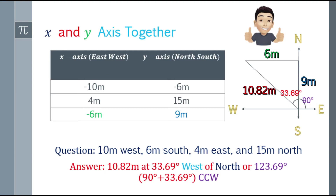Or we can express it as 123.69 degrees CCW. Where does 123.69 come from? Starting from east all the way to our angle: 90 plus 33.69. Both answers are correct — you may answer 33.69 degrees west of north or 123.69 degrees CCW.